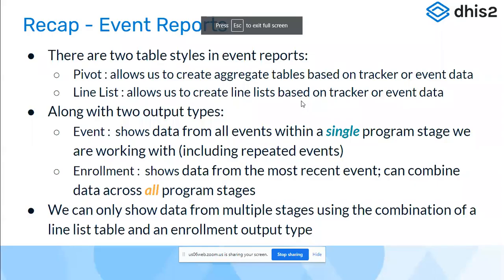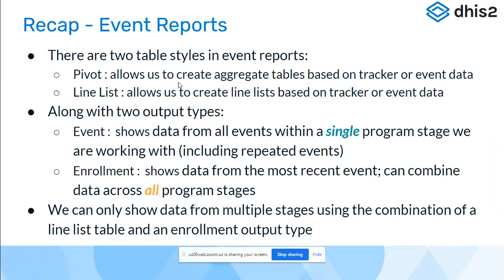I'll just summarize what we have done during this session. For the event reports, we've seen the two table styles in which event reports could be generated. One is pivot, which allows us to create aggregated tables. Then line list, which allows us to create line listed data based on the tracker or the event data.